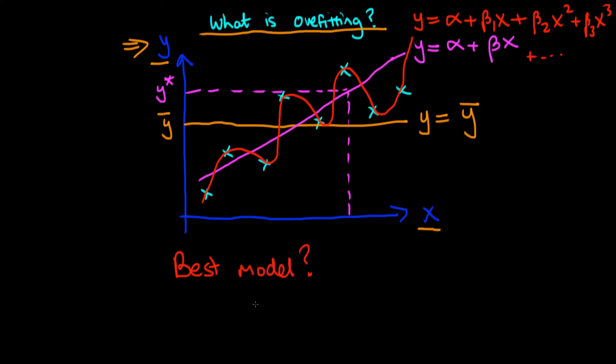Well actually it wouldn't be, because the idea here is that the red line is fitting the noise in our data rather than the signal. And what does that mean manifestly?